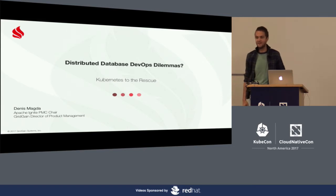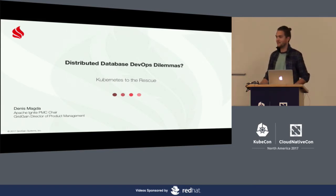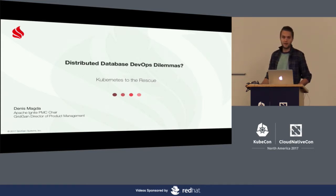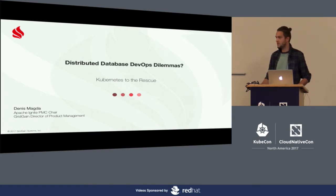A couple of words about myself. My name is Dennis Magda. Presently, I'm taking the role of Director of Product Management at GridGain, and at the same time I'm Apache Ignite PMC Chair. Don't be afraid of my current position — you're not going to listen to marketing stuff, because I joined the company as a software engineer and I'm still an active contributor to the Apache Ignite community.